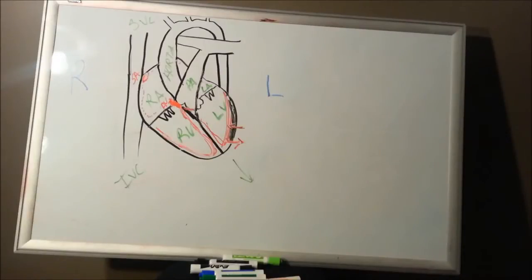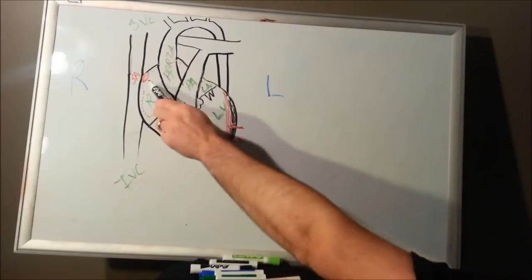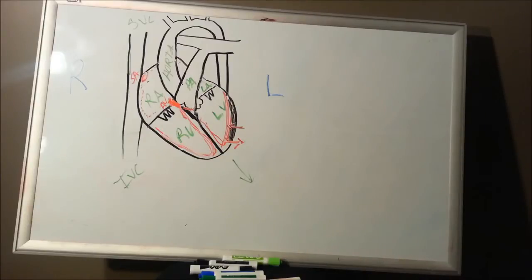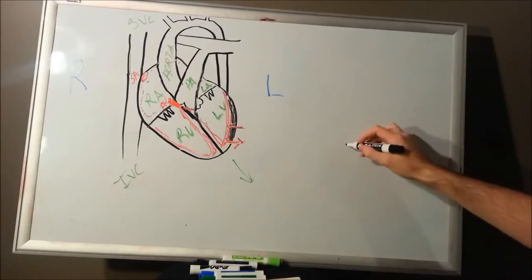We just covered the conduction system of the heart. Now let's take a look at the pacemaker node of the heart — the SA node. That's going to set your beats per minute, that's going to set your heart rate. A lot of things can influence it, but we'll talk about that later. Let's take a detailed look at the SA node.